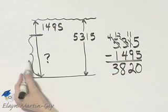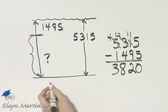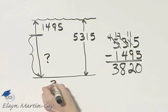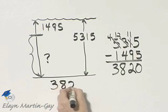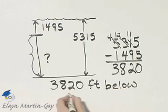So this distance is 3,820 feet. It means that down here, we're at an elevation of 3,820 feet, and that is below sea level.